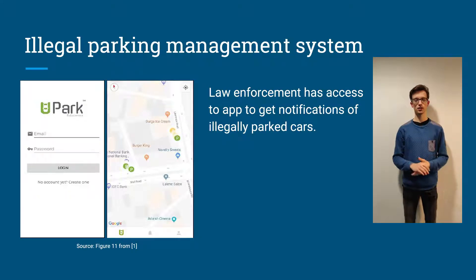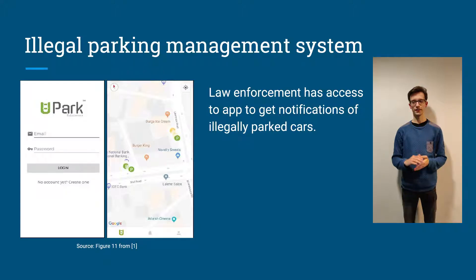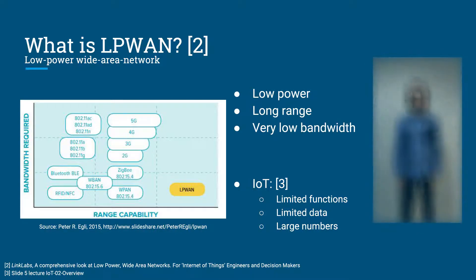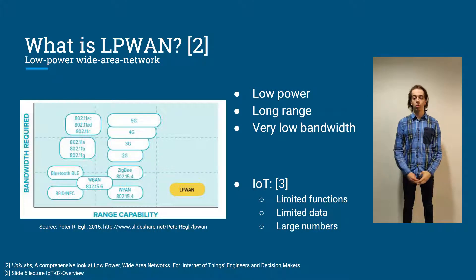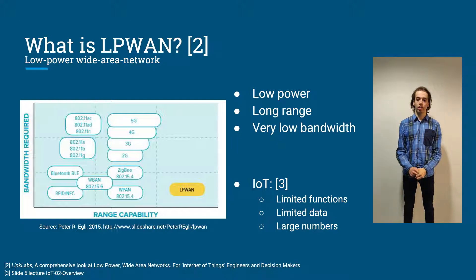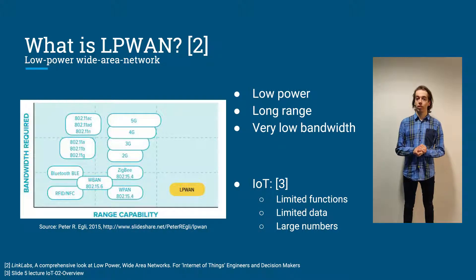Using this app, they can get notifications about illegally parked cars. And if a car is illegally parked, they can directly go to the location where the car is parked and find the driver. Low power wide area networks, or LPWAN, is special because it has very low bandwidth, but its range is immense.